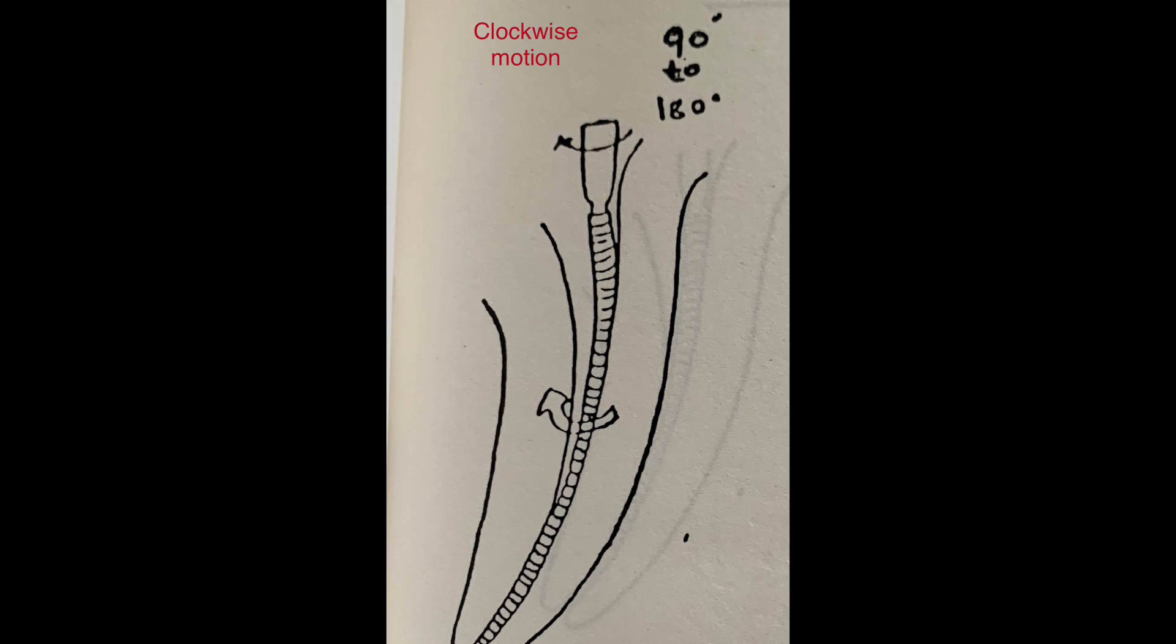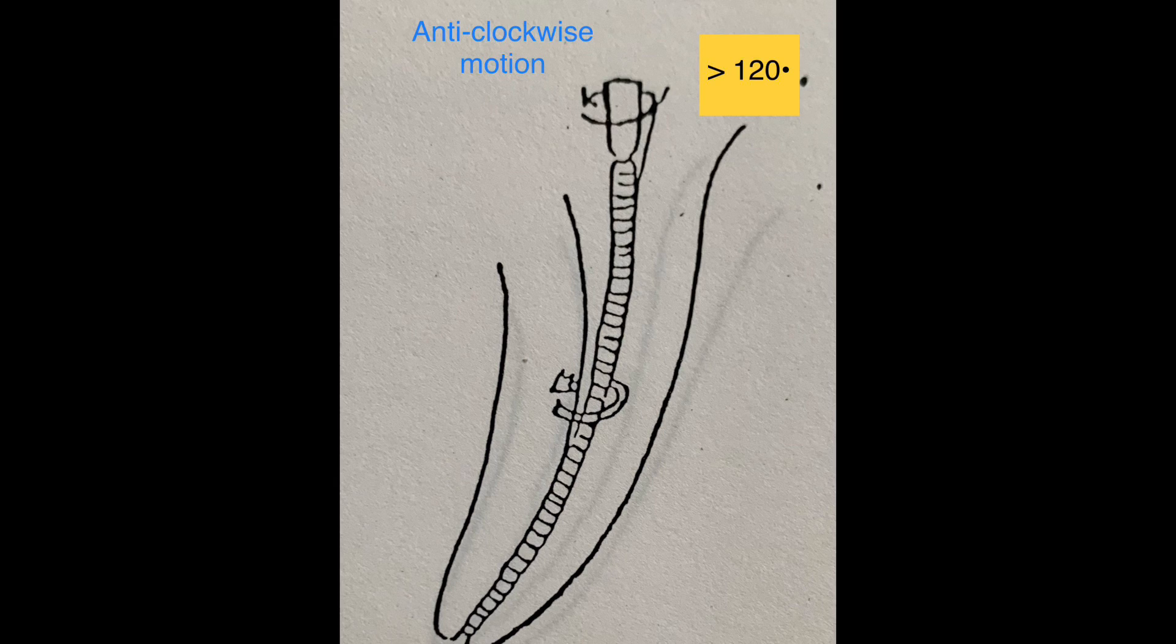This pulls the instrument inside the canal and positions the cutting edges equally in the surrounding walls. Next, the instrument is rotated counterclockwise or in the left direction by 120 to maximum 270 degrees.